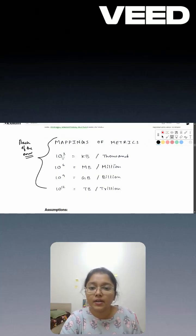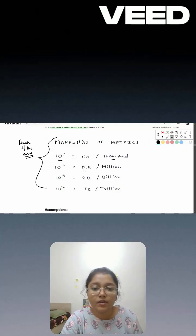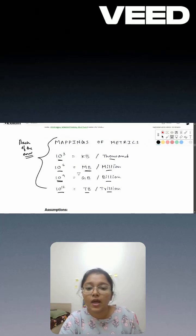When we represent anything in thousands, we'll use 10 to the power 3. Anything when we talk in terms of MB or million, we'll use 10 to the power 6. If we talk in terms of billion, we'll use 10 to the power 9, and trillion or TB will use 10 to the power 12. GB or billion is 10 to the power 9.